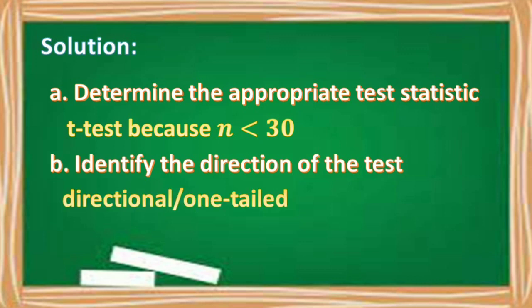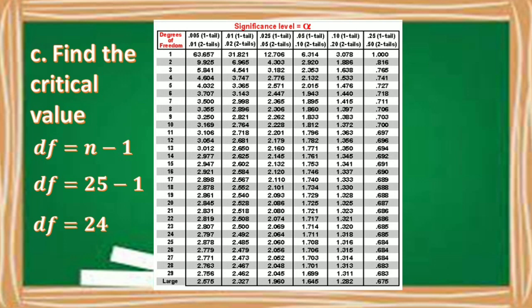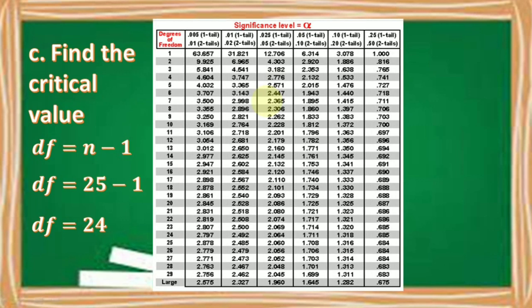B: Identify the direction of the test — it is directional or one-tailed. C: Find the critical value. We have to find the degrees of freedom first using the formula df = n − 1. Our sample size is 25, so 25 − 1 = 24; our degrees of freedom is 24. Looking at the t-table with df = 24, a one-tailed test, and significance level of 0.01, our critical value is 2.492.